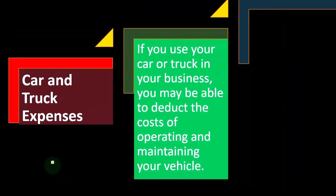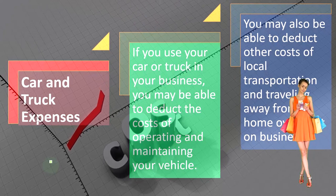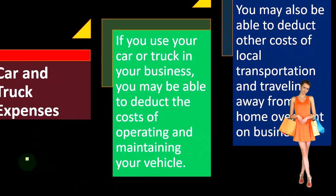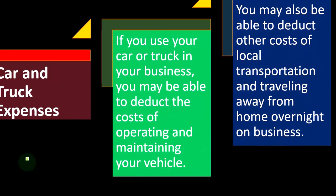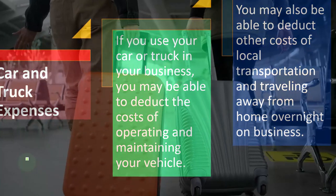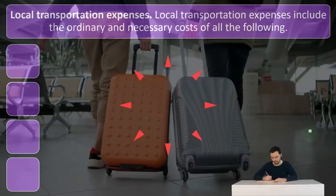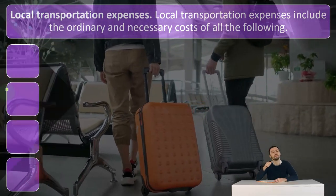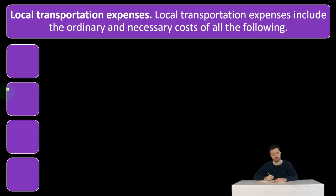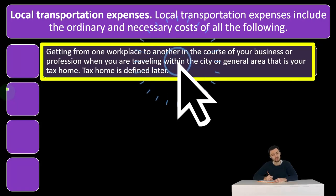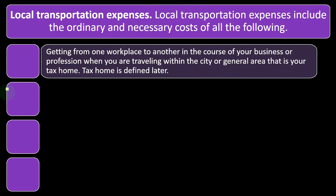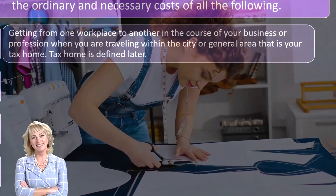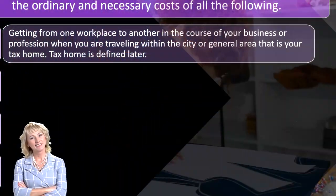If you use your car or truck in your business, you may be able to deduct the costs of operating and maintaining your vehicle as a business expense. You may also be able to deduct costs of local transportation and traveling away from home overnight on business. Local transportation expenses include the ordinary and necessary costs of: getting from one workplace to another in the course of your business when traveling within the city or general area that is your tax home; visiting clients or customers; going to a business meeting away from your regular workplace.